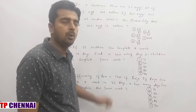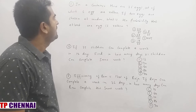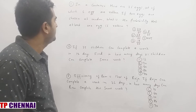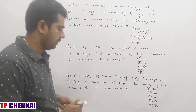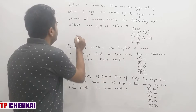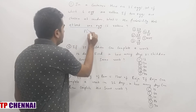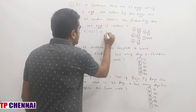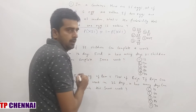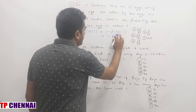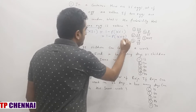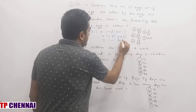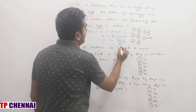First question: In a container there are 26 eggs out of which 6 eggs are rotten. If 2 eggs are chosen at random, what is the probability that at least 1 egg is rotten? At least means P(X ≥ 1), which equals 1 minus P(X = 0). That means I don't want any rotten eggs, so remaining 20 eggs. From that I need to choose 2. Total possible cases are 26C2.